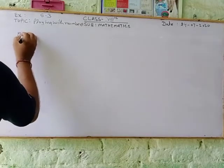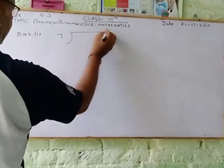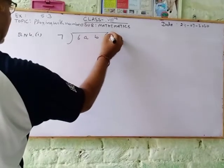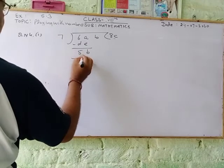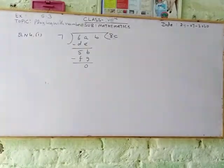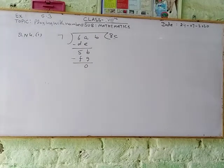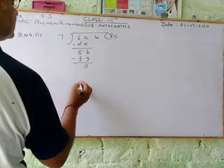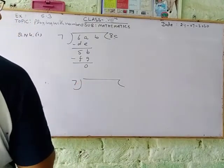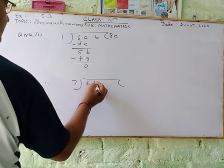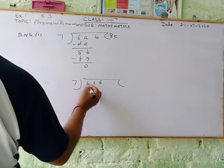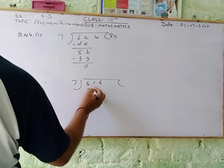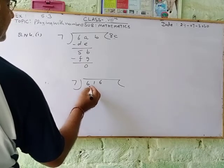Question number 4, first part: 7AB and 8C, that is minus DE and 5B, and minus FZ upon 0. So we are taken here 7, 1, 6. We are taken 1 and 6, 5, 6. We get 5 and 6.